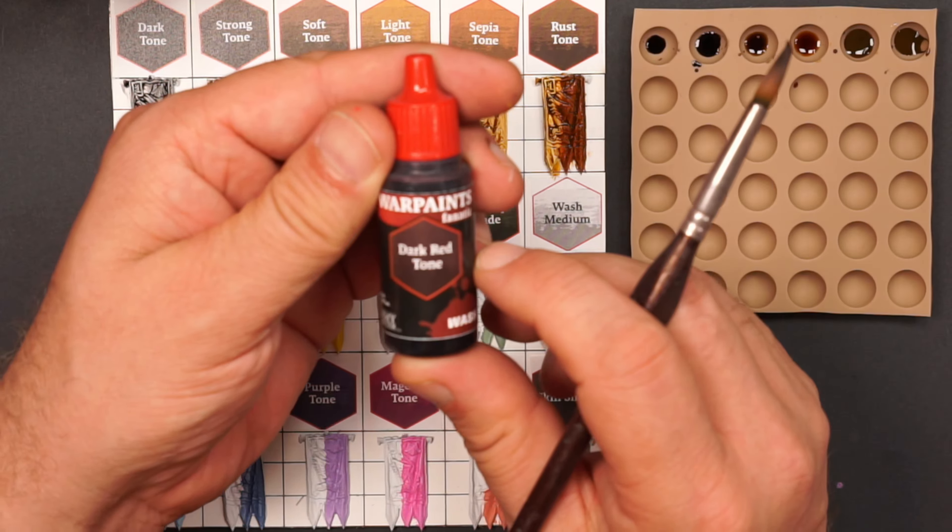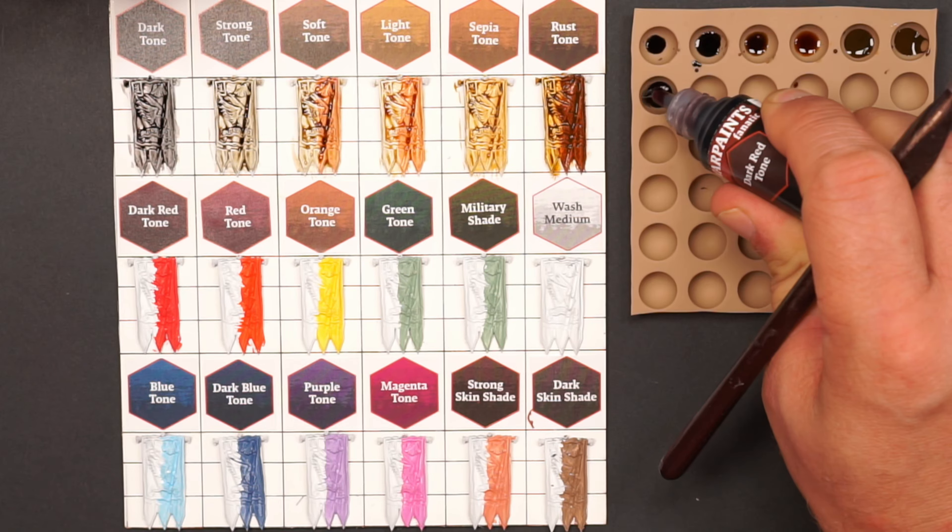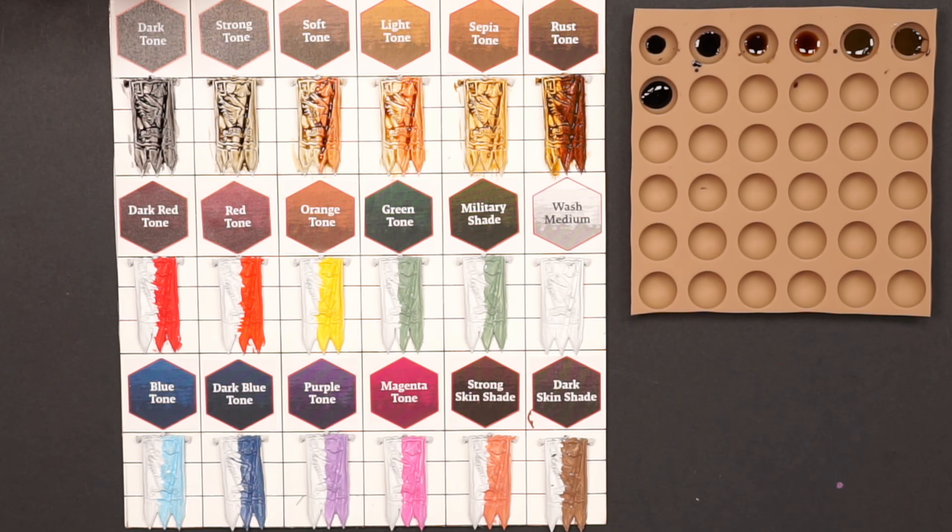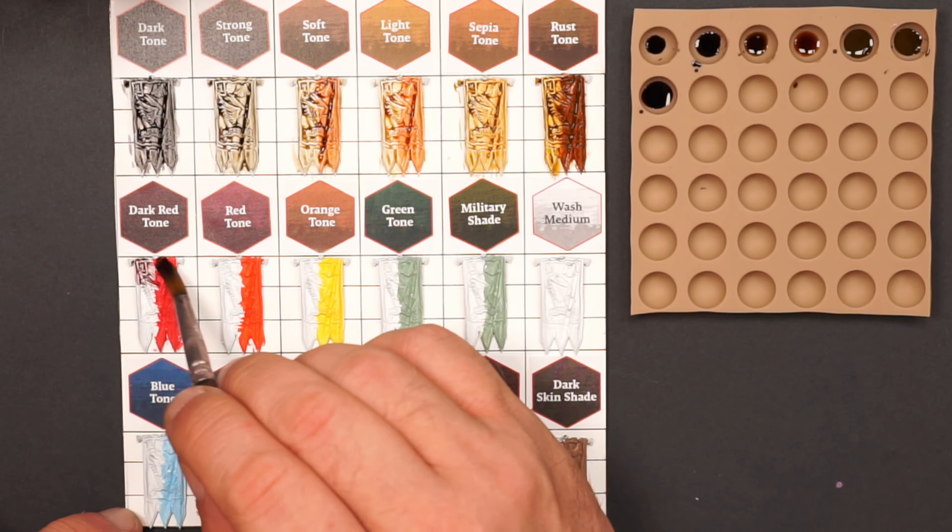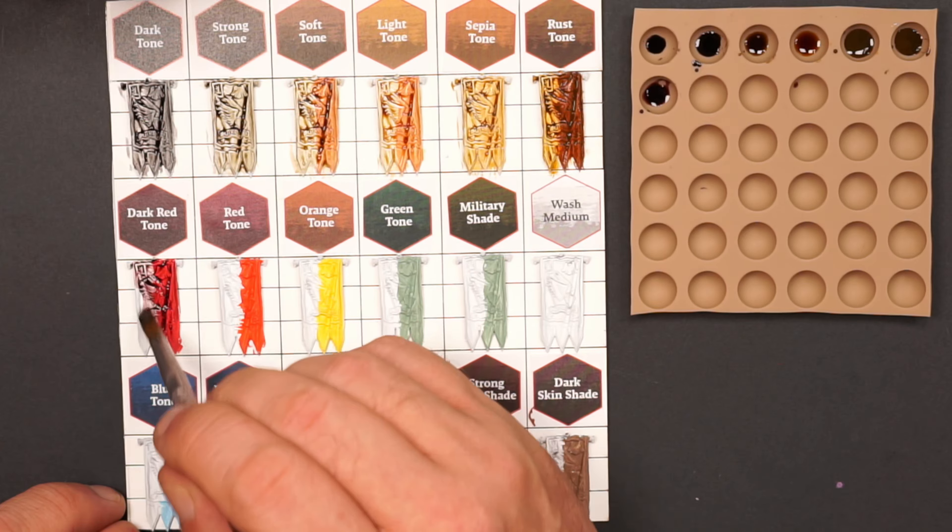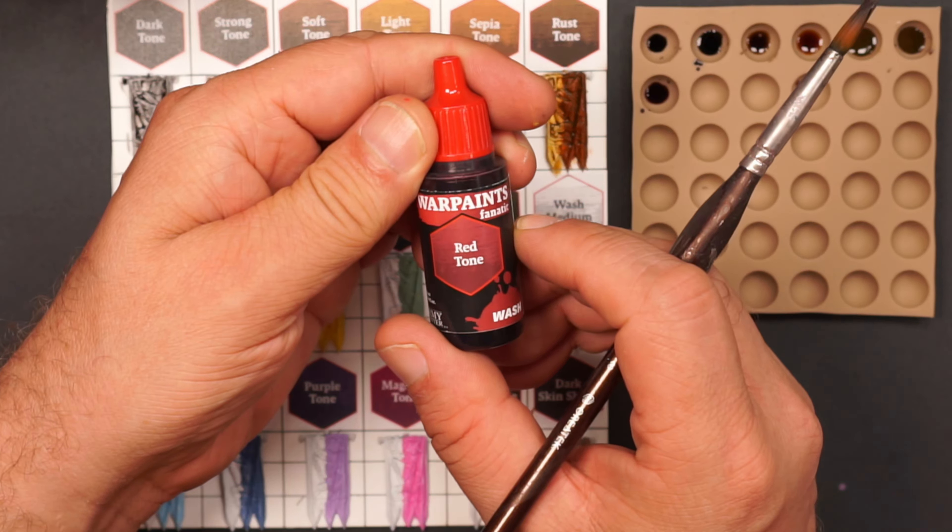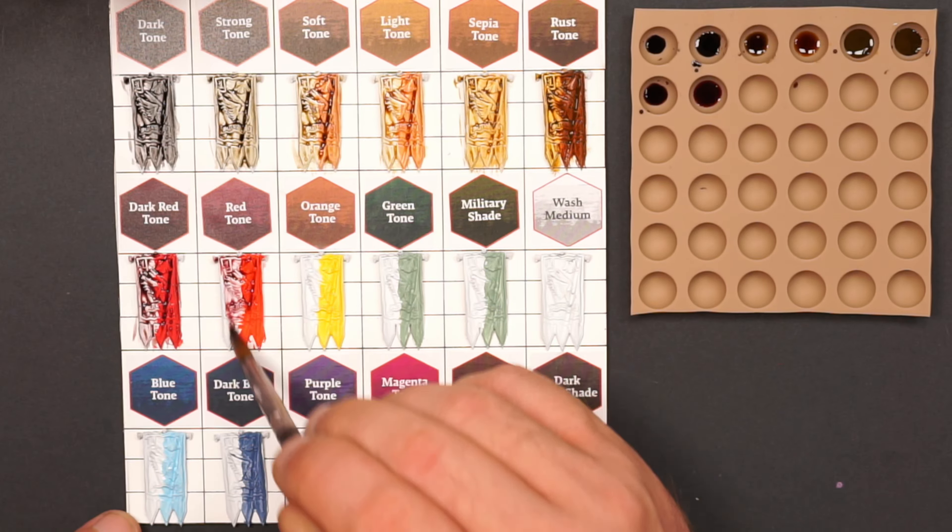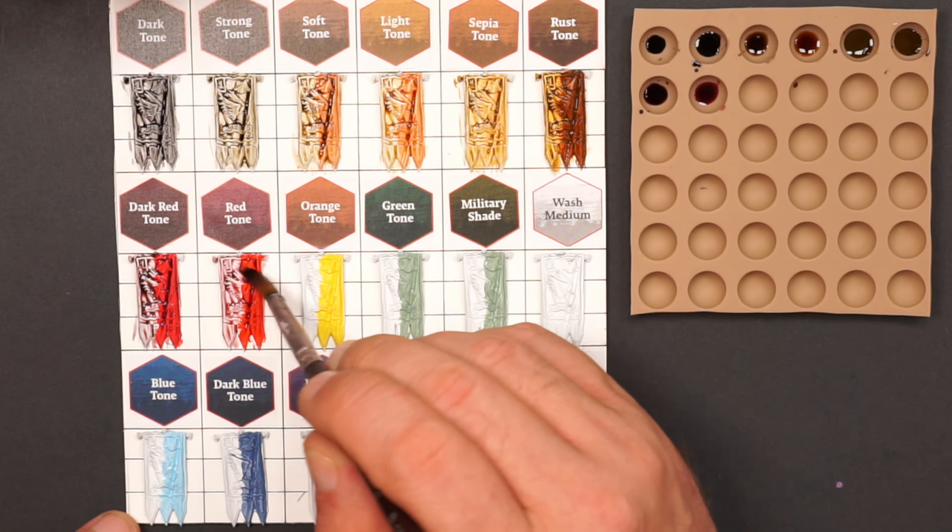Dark red tone is also a new color in the new series. And as the label says, it's a dark red tone. I think it will be a good supplement for maybe one of the effect paints, the dry blood or the fresh blood or something. The red tone is, as it's called, the red tone. It's the same color as the old Army Painter wash, it just has a new label and it works exactly as the old red tone.